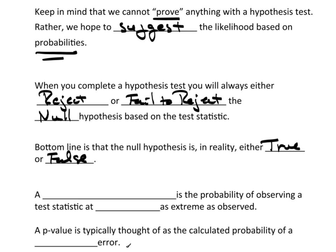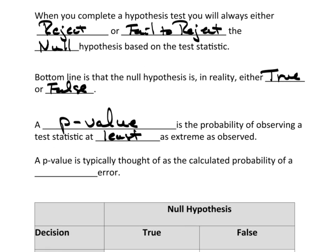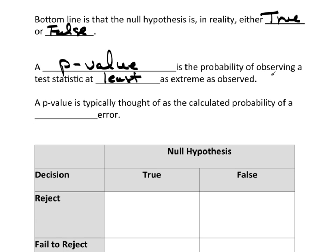Now we will base this on probabilities, and specifically we will be using what's known as a p-value. A p-value is the probability of observing a test statistic at least as extreme as was actually observed. A p-value is typically thought of as the calculated probability of a type 1 error.